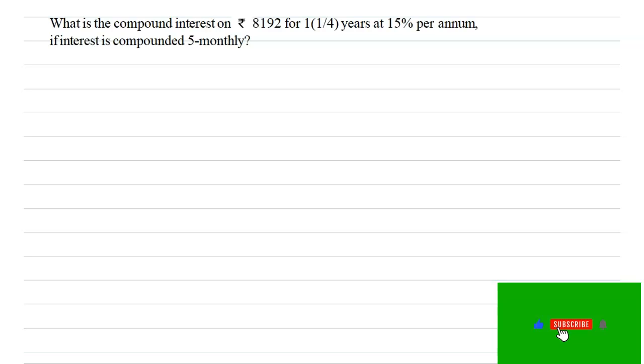Here we are going to discuss the question: what is the compound interest on Rs. 8192 for 1 1/4 years at 15% per annum if the interest is compounded 5-monthly? We have to find the compound interest for the given details if interest is compounded 5-monthly.